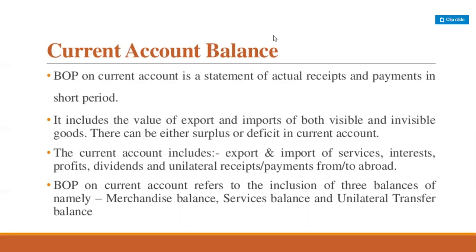The major part of transactions in foreign trade is in the form of export and import of goods — visible items. Payments for imports of goods are recorded on the negative side, meaning the debit side, and receipts from exports are shown on the positive side, meaning the credit side. The balance of these visible exports and imports is known as the balance of trade or trade balance.